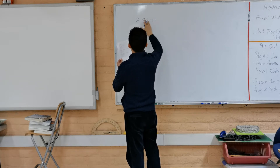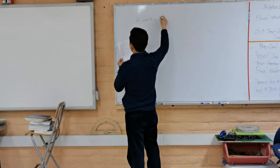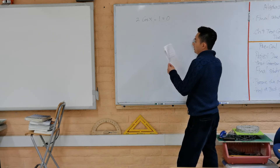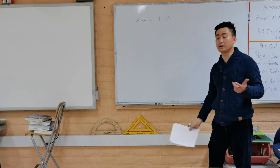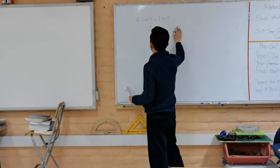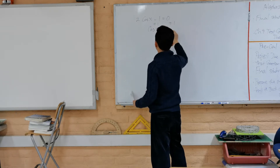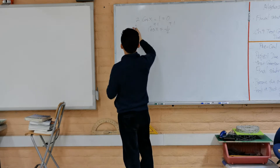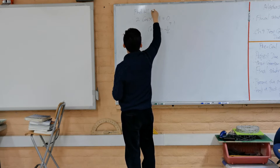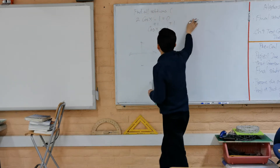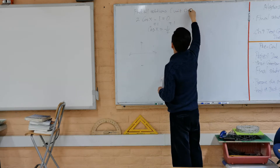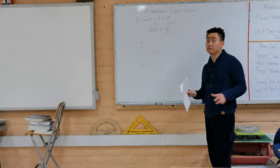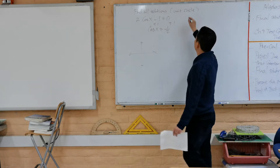Here's one problem without needing an identity: 2cos(x) − 1 = 0. Isolate cosine of x and find all solutions by going around the unit circle. You can go around the unit circle as many times as you want — counterclockwise, unless otherwise specified.